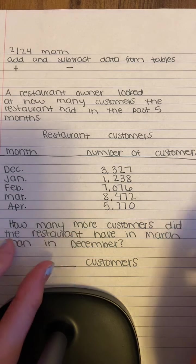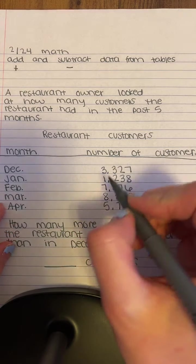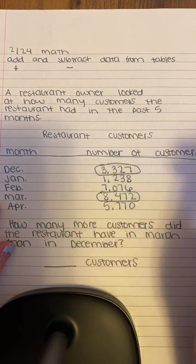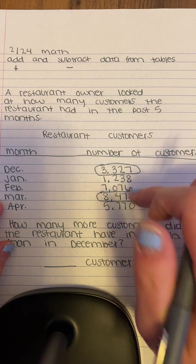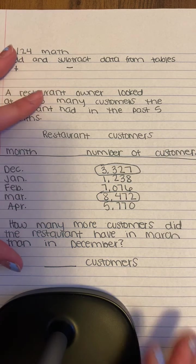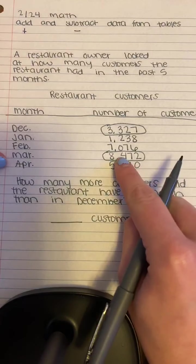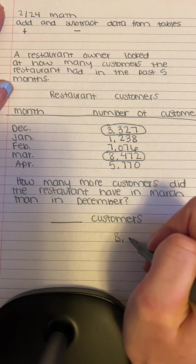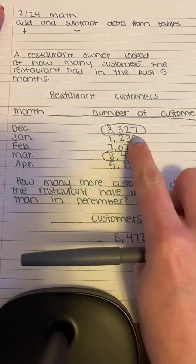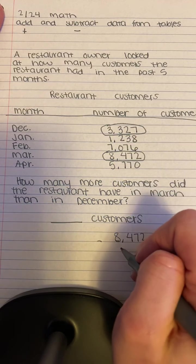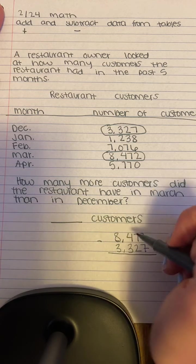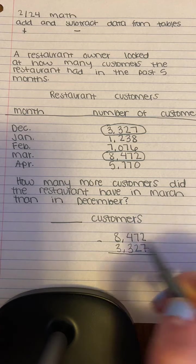How many more customers did the restaurant have in March than in December? Here is March, and here is December. They had a lot of customers this month, so I'm going to write my biggest number first — March, which is 8,472 — and I'm subtracting the December number, which is 3,327. I lined it up: my ones are matching, my tens, my hundreds, and my thousands are matching. Now we're going to subtract.